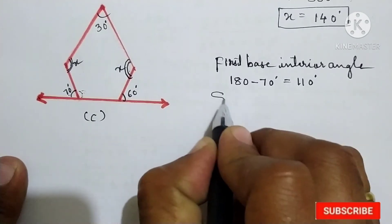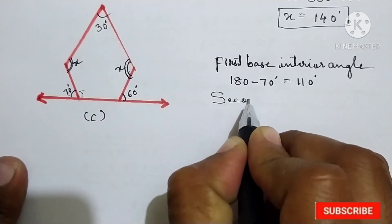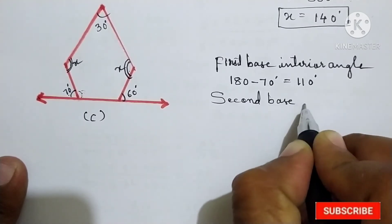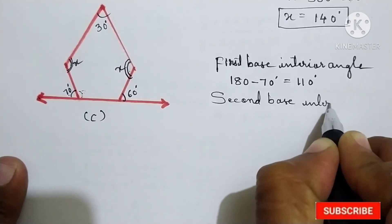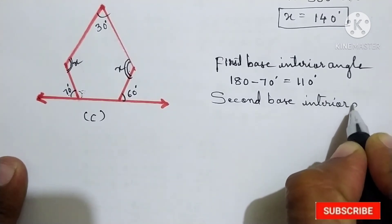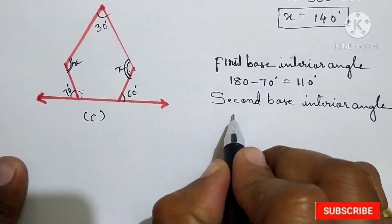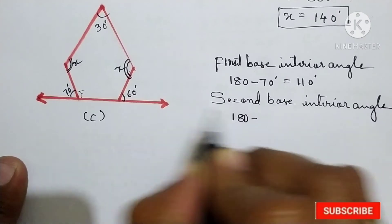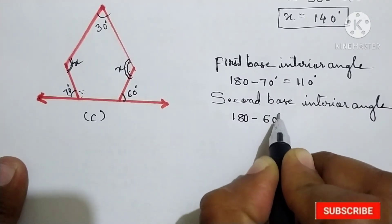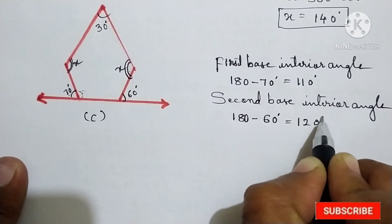Now, second point — this angle we have to find here: the second base interior angle. This is also the same: 180 degrees minus 60 degrees is there, so we take 60 degrees, and this is equal to 120 degrees.